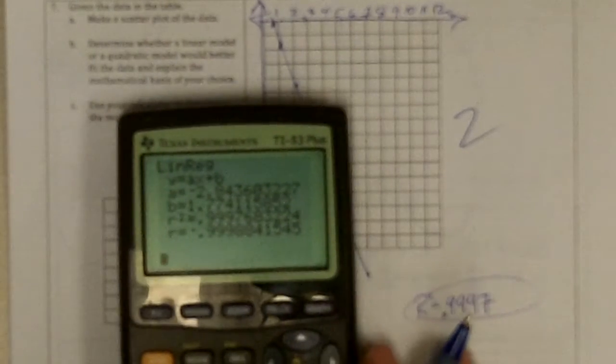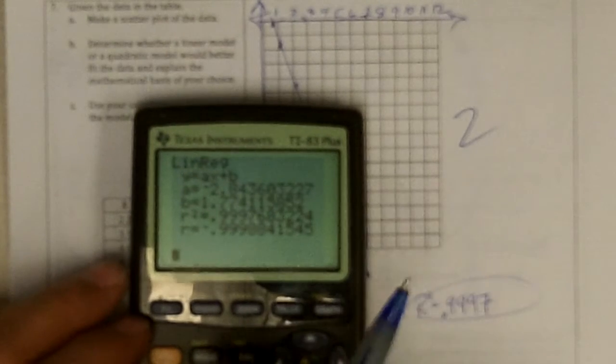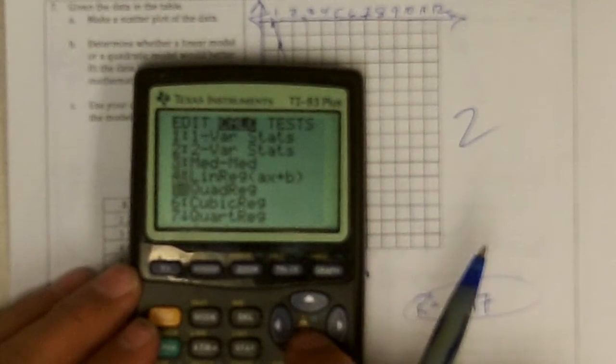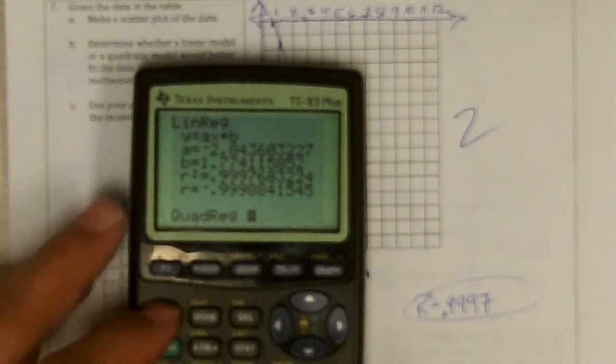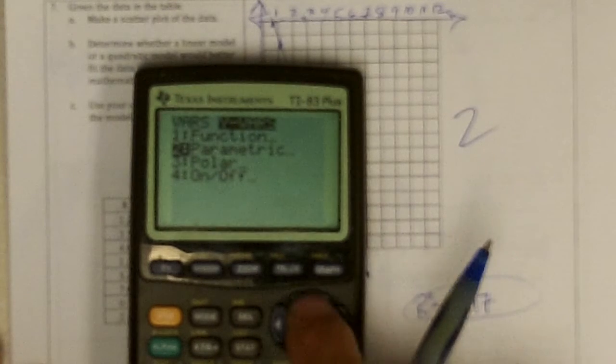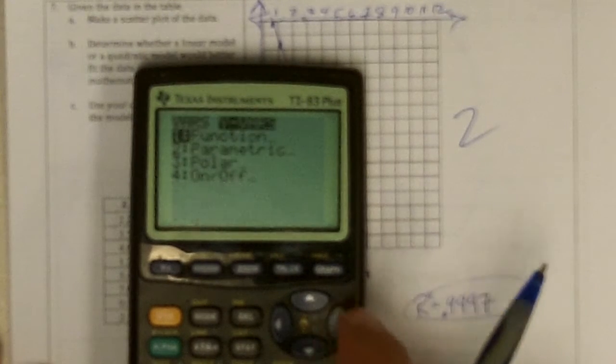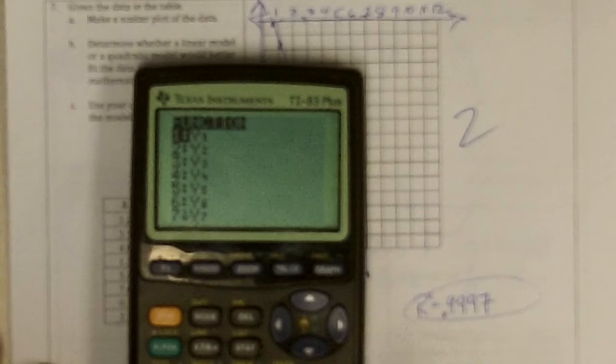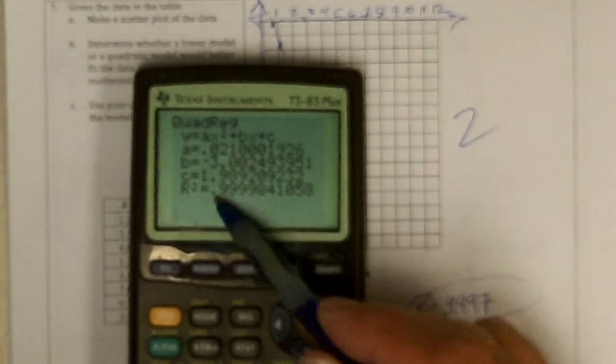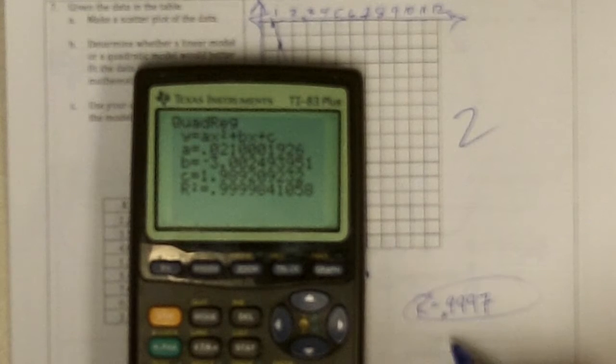And let's see. Now, let's do the quadratic stat. Calculate the quadratic regression using list 1, comma, list 2, comma, and let's put it in Y2. And it has an R squared value of 0.9999.